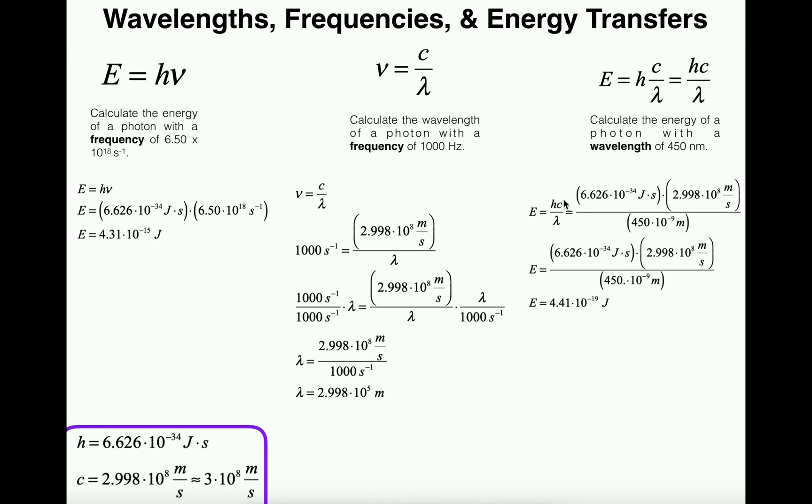We're asked to calculate the energy of a photon with a wavelength of 450 nanometers. Our energy equals hc over lambda. We know h, that's Planck's constant: 6.626 × 10⁻³⁴ joule seconds. The speed of light is 2.998 × 10⁸ meters per second, and then we divide by the wavelength.